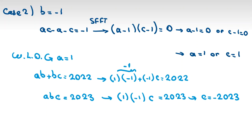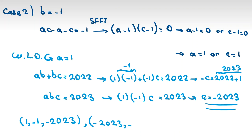1 times negative 1 is negative 1. Now if you take negative 1 to the right-hand side, negative C will be 2022 plus 1, which is 2023, and C will be negative 2023. So we found the answer. A is 1, B is negative 1, C is negative 2023. And also we can switch A and C, so A is negative 2023, B is negative 1, and C is 1.